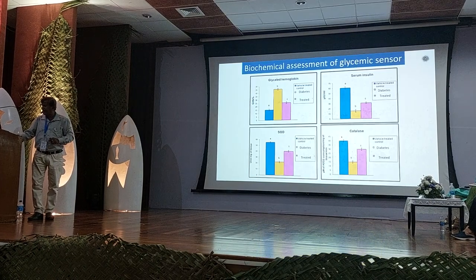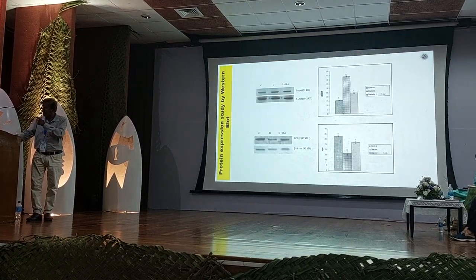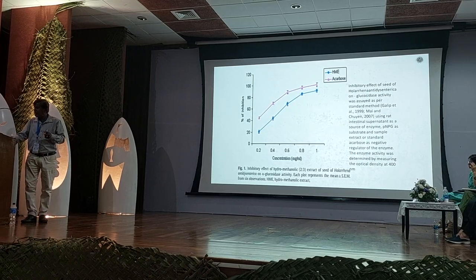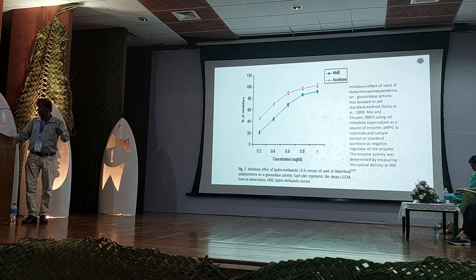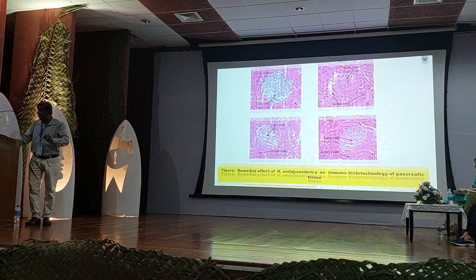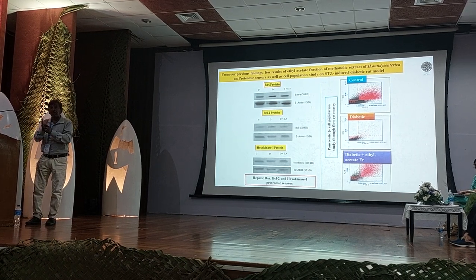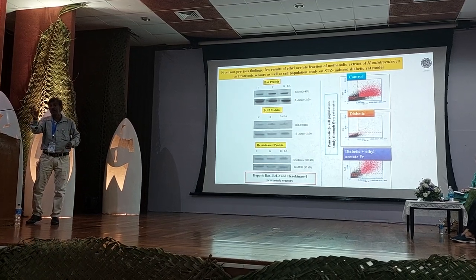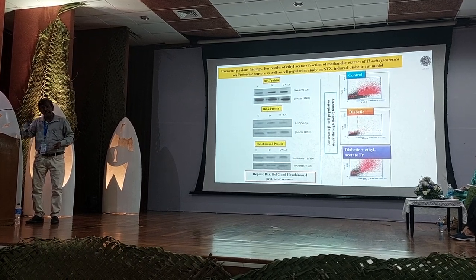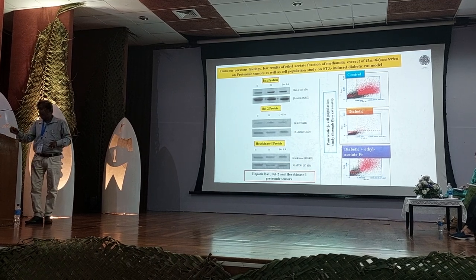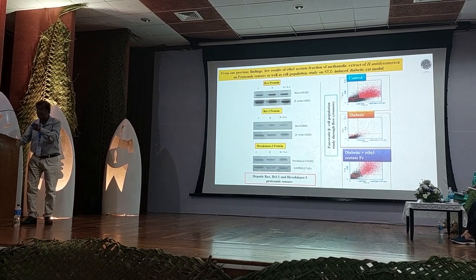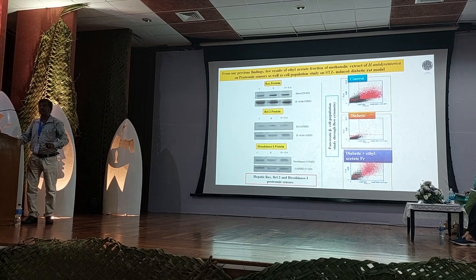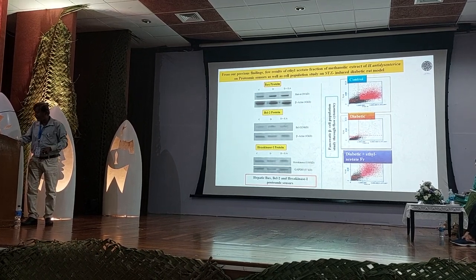We also obtained glycated hemoglobin as well as proteomic study, gene expression study, IC50 study, and safety factor study. That is the inhibitory effect of the alpha-glucosidase activity at the brush border of the GI tract. These are the histological studies of the beta cells. We established that the hepatic stem cell is one of the most important stem cells for beta cell generation, and when we minimize toxic stress imposition on the liver, the beta cell population gradually increases — which is one way of recovering from diabetes.